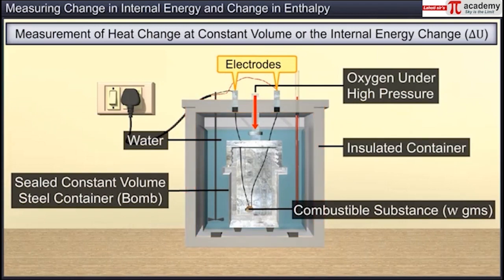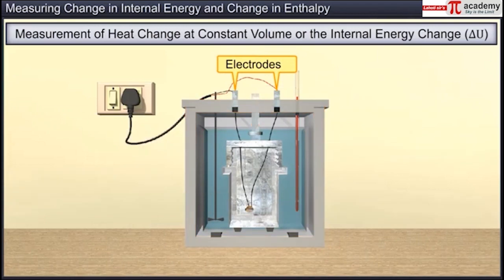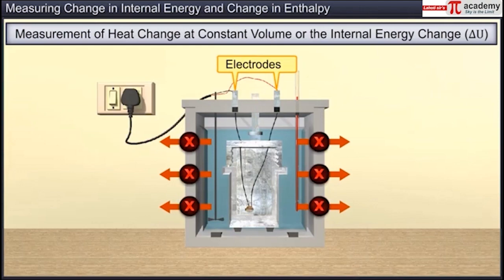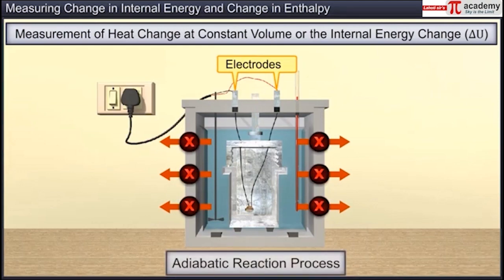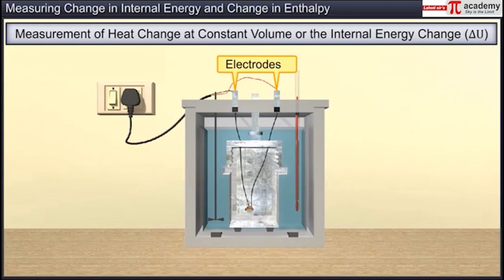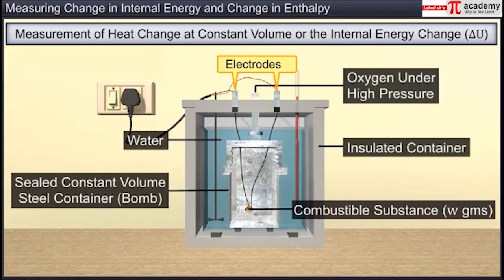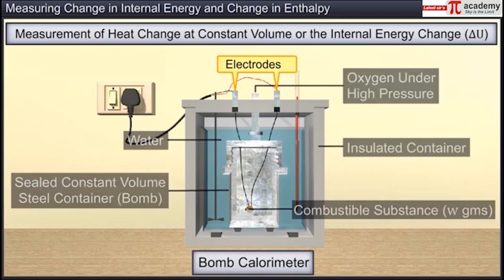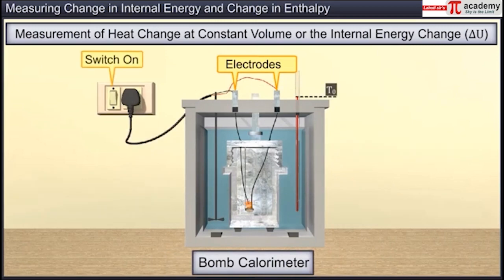The sealed bomb is then immersed in a known amount of water contained in an insulated container. As the container is insulated, there is no heat exchange with the surroundings and the reaction process is adiabatic. This whole setup is called the bomb calorimeter. The sample is ignited electrically and the heat produced by the combustion reaction is absorbed by the water surrounding the bomb.